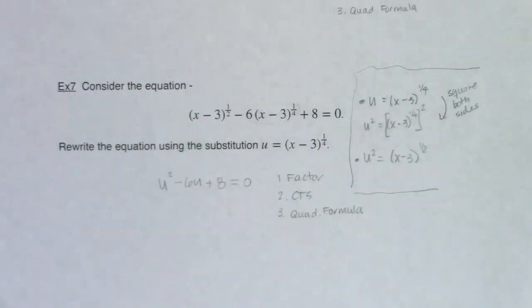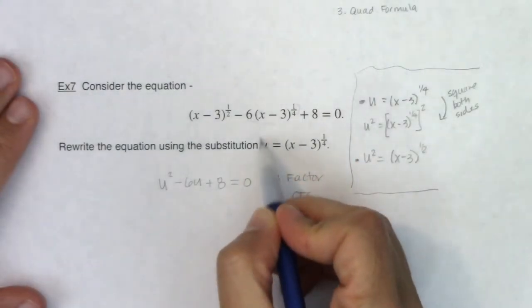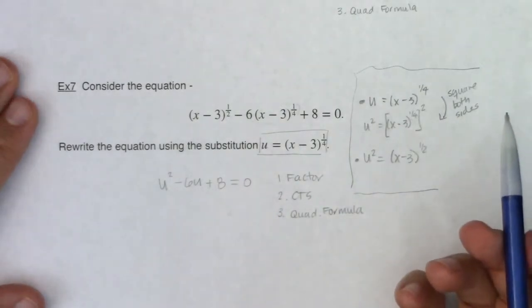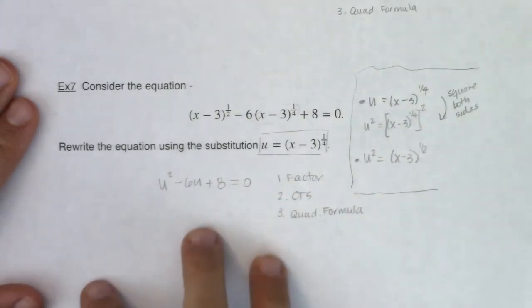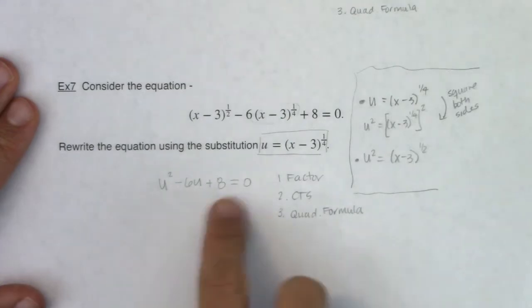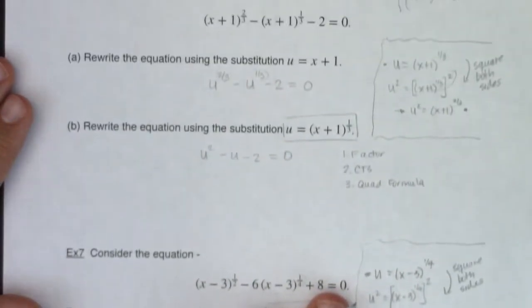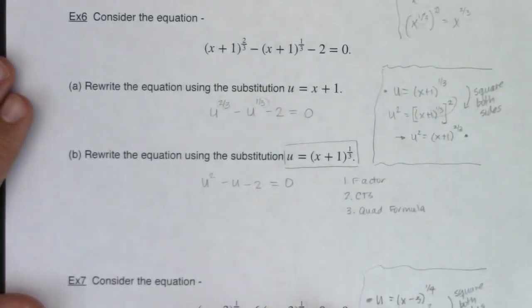So now the trick, the catch in both examples 6 and 7 where I set you up with the u substitution. How do you figure out what the u substitution needs to be? Because it does make a difference. If you pick the wrong u then this substitution doesn't work out the way you want it to. And I'll give you a for instance.